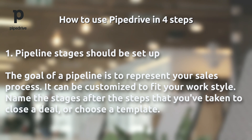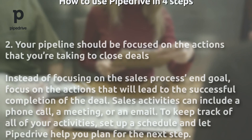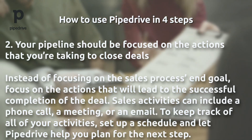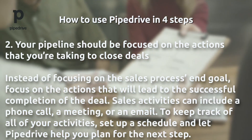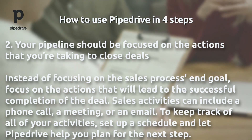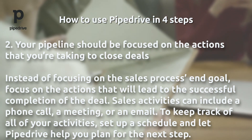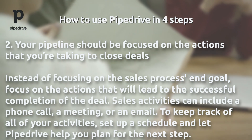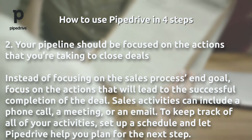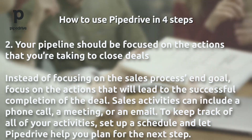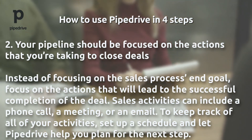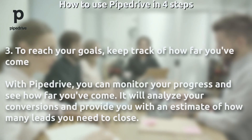Two: your pipeline should be focused on the actions that you're taking to close deals. Instead of focusing on the sales process and goal, focus on the actions that will lead to the successful completion of the deal. Sales activities can include a phone call, a meeting, or an email. To keep track of all your activities, set up a schedule and let Pipedrive help you plan for the next step.